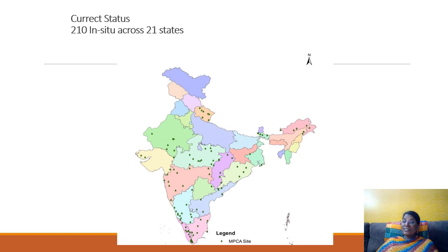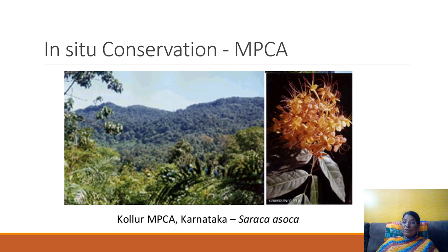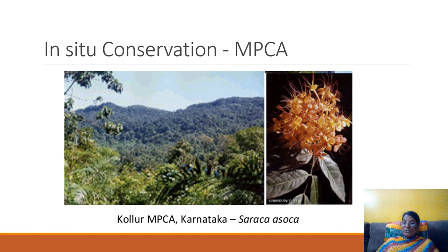These MPCAs are protecting several medicinal plants, including threatened ones. One example is the Kullur Mukambika Medicinal Plant Conservation Area, an in-situ conservation site that is also an important pilgrimage area. There we found a viable population of a very important medicinal plant species known as Saraka Ashoka. Next time you visit Kullur, do not miss seeing this particular species. Thank you.